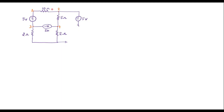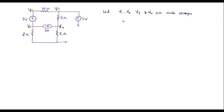So here we have 1, 2, 3, 4 nodes. We are supposed to find the voltages at these nodes. Let the voltage at node 1 be V1, here voltage is V2, here voltage is V3, and here voltage is V4. That is, let V1, V2, V3, and V4 are node voltages at nodes 1, 2, 3, and 4 respectively.